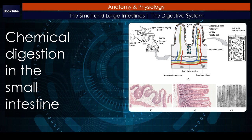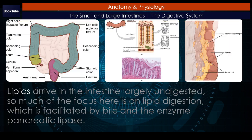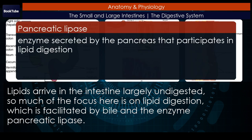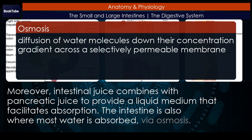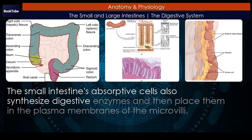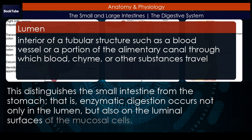Chemical digestion in the small intestine. The digestion of proteins and carbohydrates, which partially occurs in the stomach, is completed in the small intestine with the aid of intestinal and pancreatic juices. Lipids arrive in the intestine largely undigested, so much of the focus here is on lipid digestion, which is facilitated by bile and the enzyme pancreatic lipase. Moreover, intestinal juice combines with pancreatic juice to provide a liquid medium that facilitates absorption. The intestine is also where most water is absorbed via osmosis. The small intestine's absorptive cells also synthesize digestive enzymes and then place them in the plasma membranes of the microvilli, meaning enzymatic digestion occurs not only in the lumen, but also on the luminal surfaces of the mucosal cells.